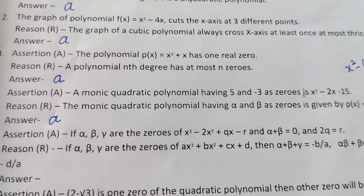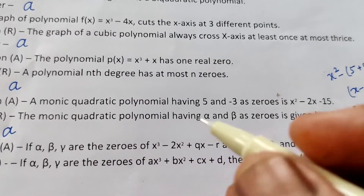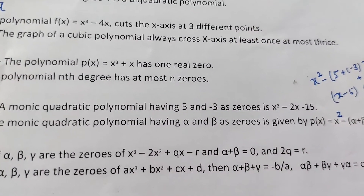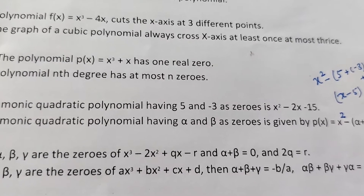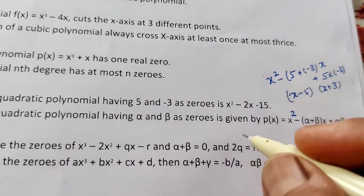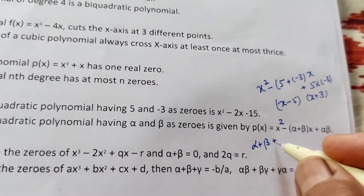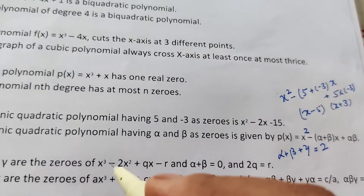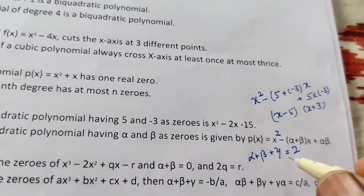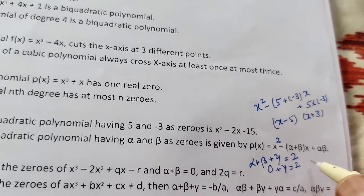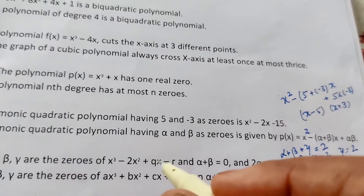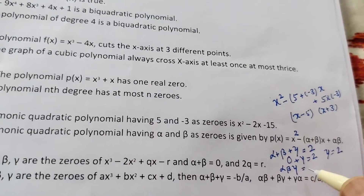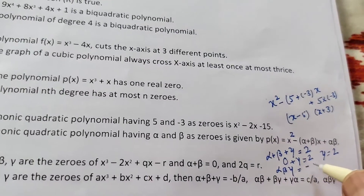Question 5: If α, β, γ are zeros of x³ - 2x² + qx - r, and α + β = 0, then we check if 2q = r. Since α + β + γ = -b/a = 2, and α + β = 0, we get γ = 2. The product of zeros α·β·γ = -d/a = r, so α·β·2 = r, giving α·β = r/2.